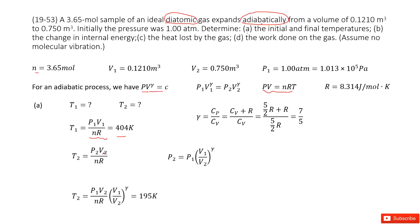We have the adiabatic relation PV^γ = constant. That means P1·V1^γ = P2·V2^γ. Therefore, P2 = P1·(V1/V2)^γ. We can substitute this expression for P2 into the T2 function. In that combined function, P1, V1, V2, and n are all given.